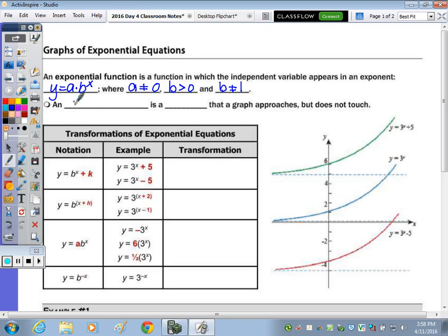The next bullet: an asymptote. An asymptote is a line that a graph approaches but does not touch. So since it's a line, we're going to be looking to write the equation of a line, and typically it's a horizontal line which is y equals something.